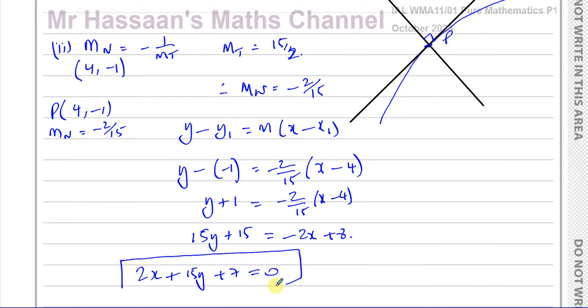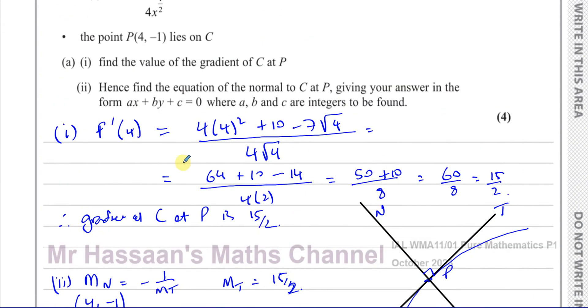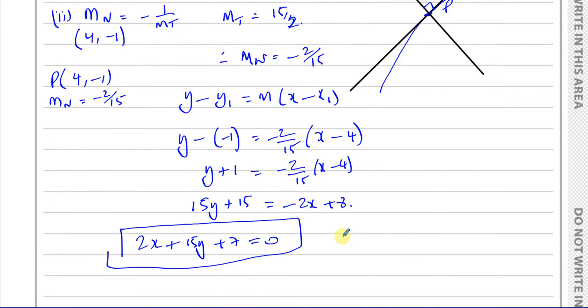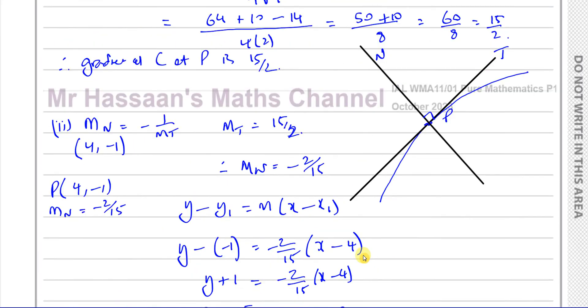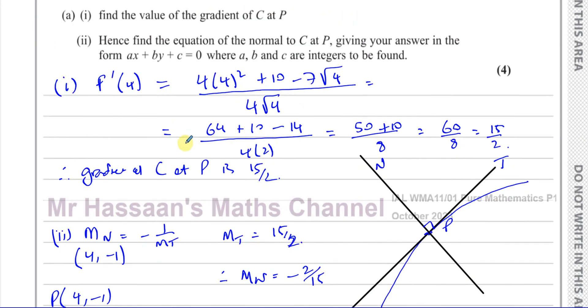That is the equation of the normal to the curve at the point P, concluding part 2. Now we're going to go on to 7B.